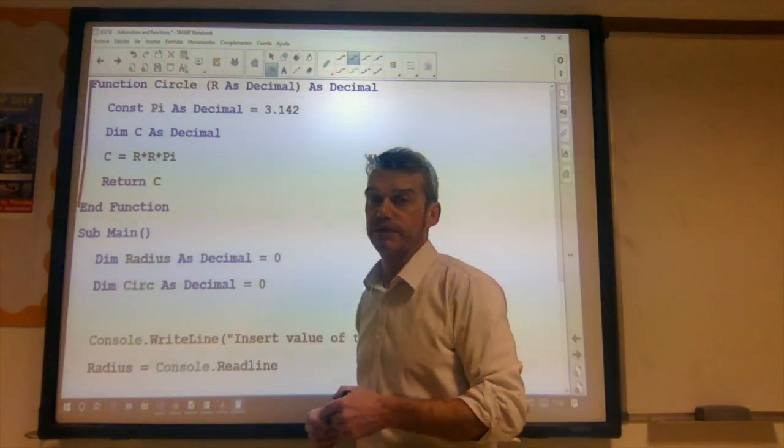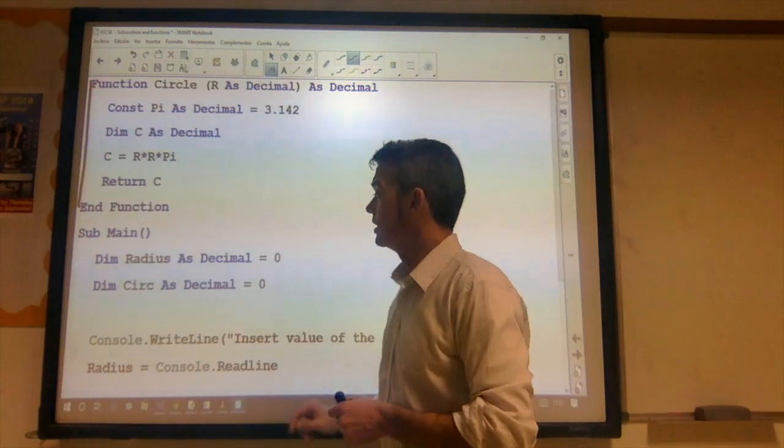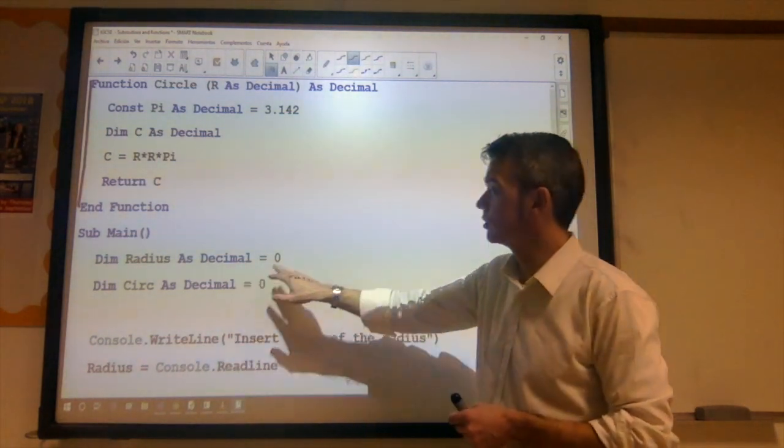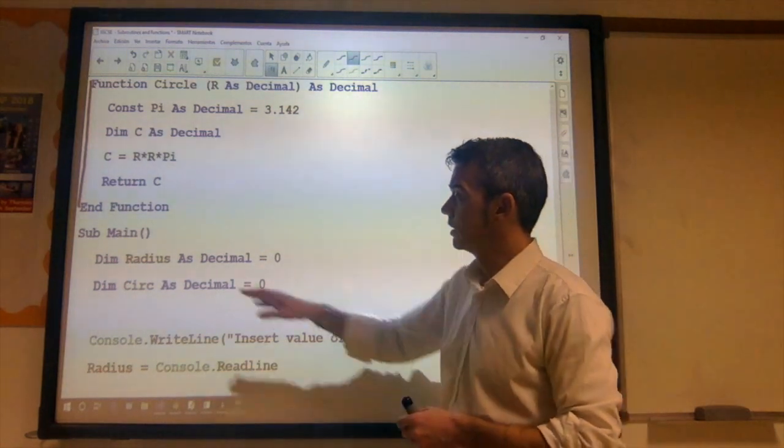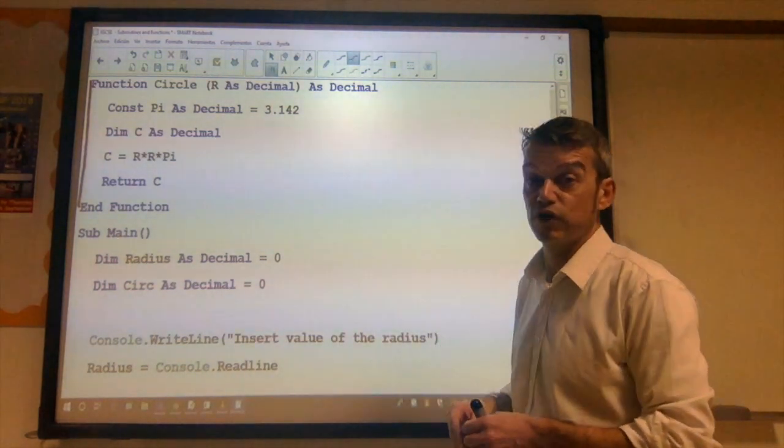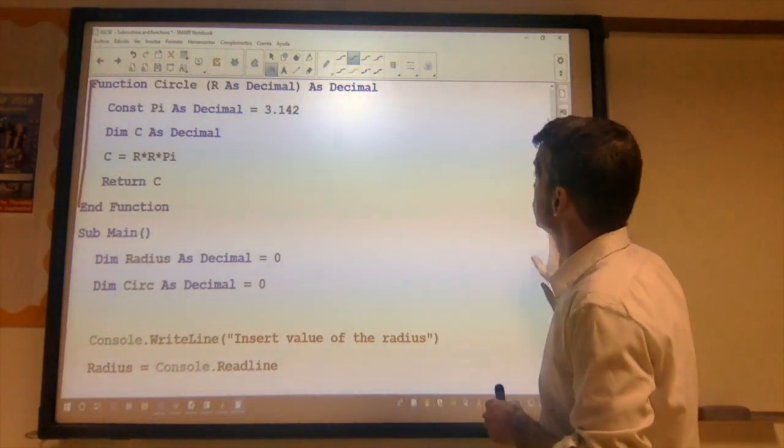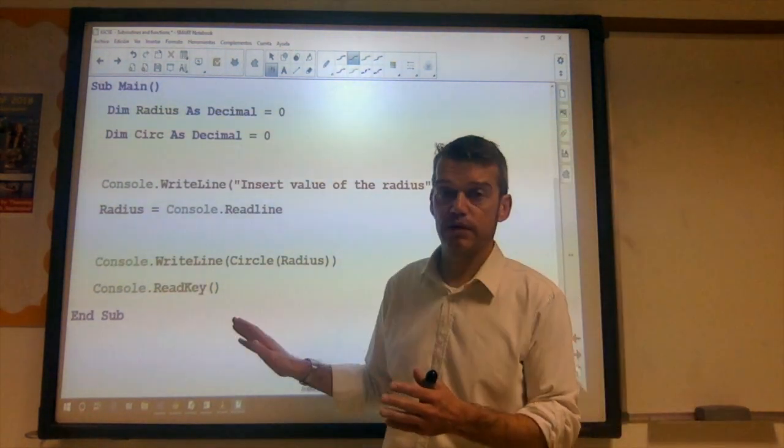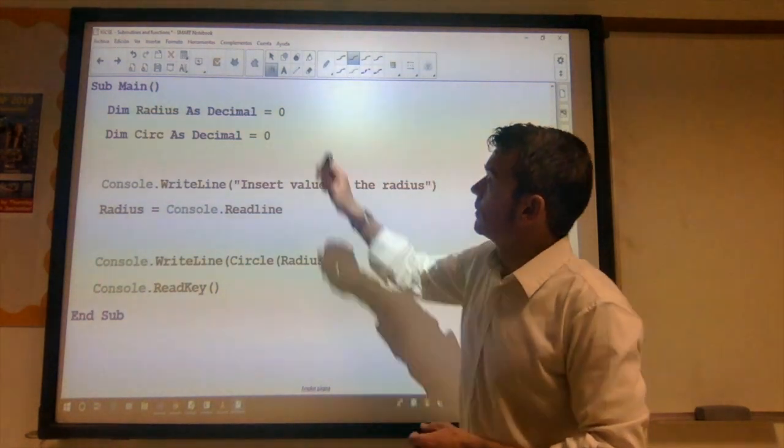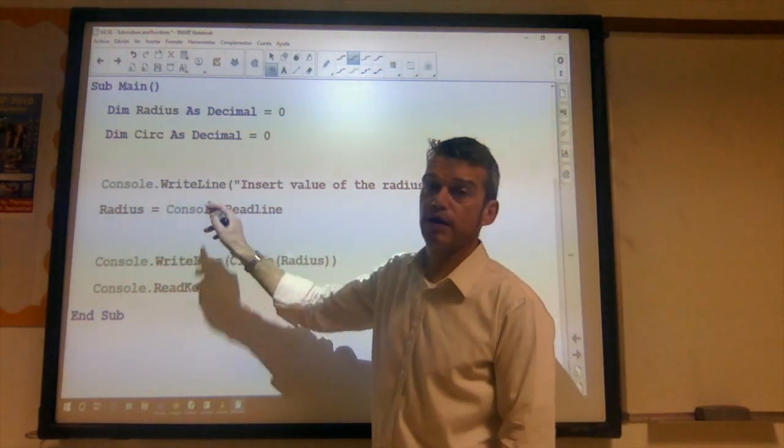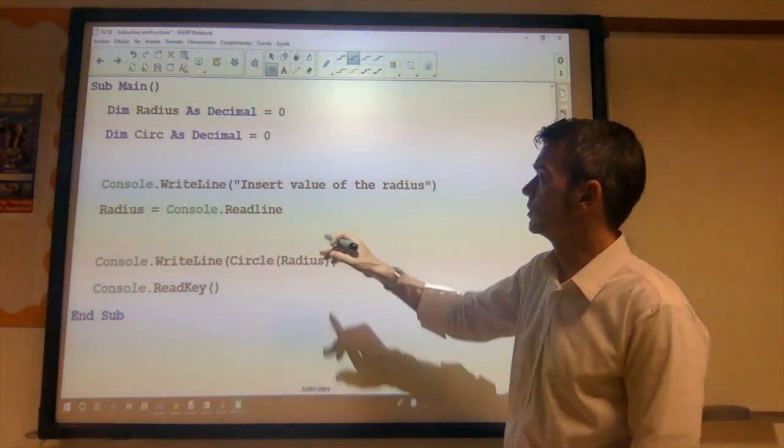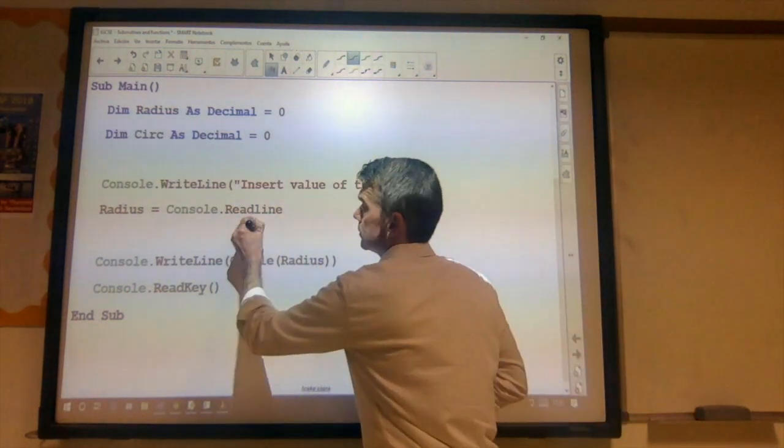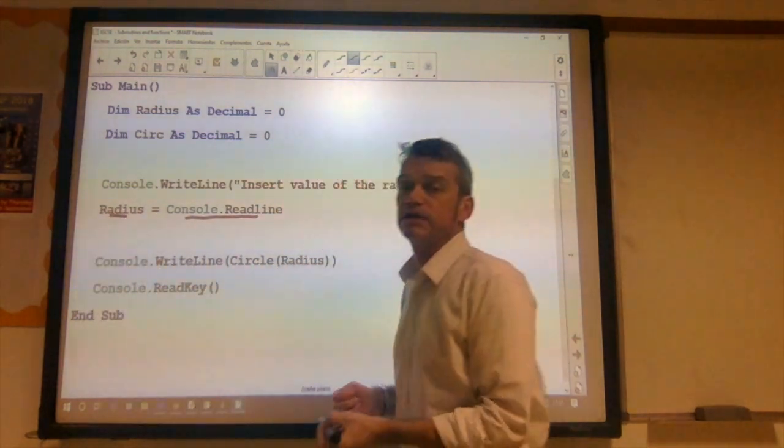We get to the main subroutine. We declare our radius variable, and we declare it as a decimal, a type decimal, and we set it, we assign the value zero to it. We do the same with circ, whatever circ is going to be. And then we move on to the next part of our main routine. Okay, which we've got here. So we've got console writeline. We're outputting something to the console. Input the value of the radius. So we're asking the user for the value of the radius. And whatever the user inputs is going to be stored in the radius variable.